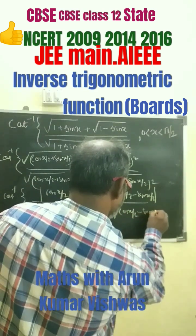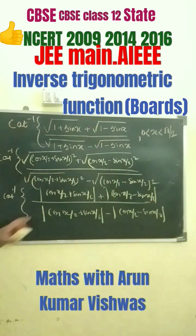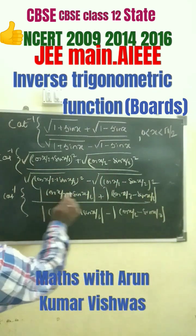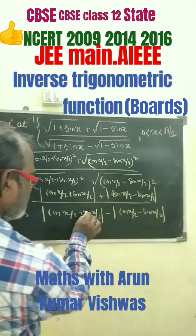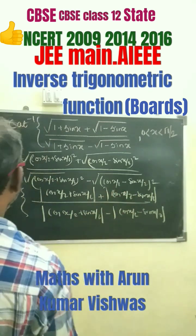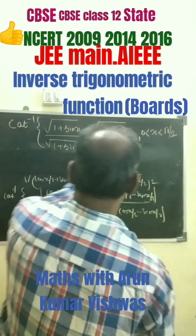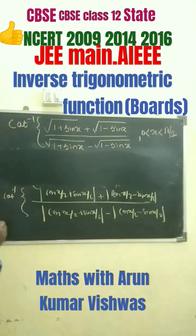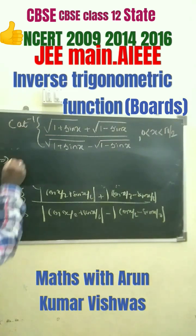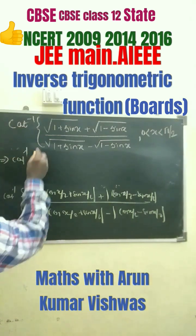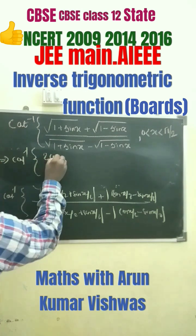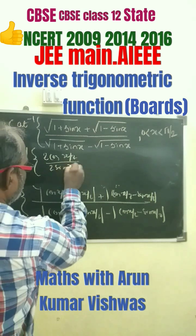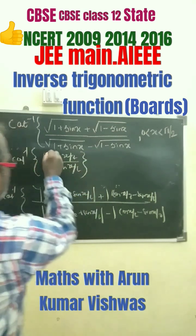On further simplification, you can see that terms get cancelled — the numerator becomes 2·cos(x/2) and the denominator becomes 2·sin(x/2). So finally, we write cot inverse of 2·cos(x/2) divided by 2·sin(x/2), and the 2s cancel off.